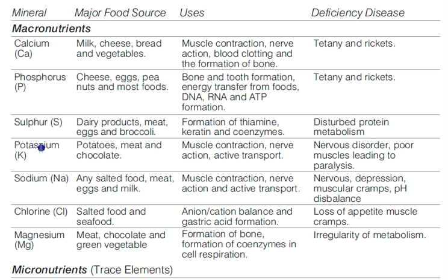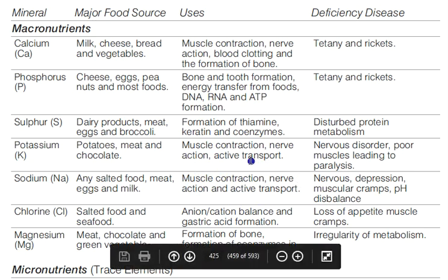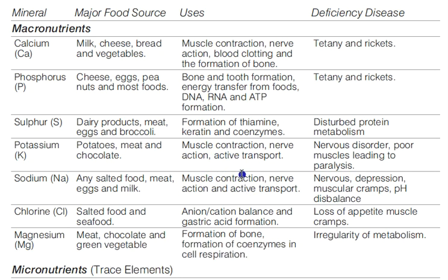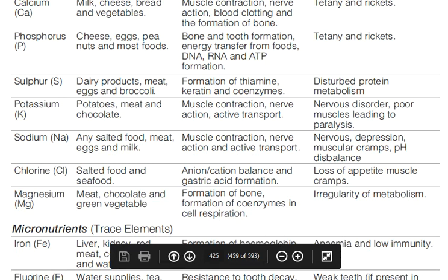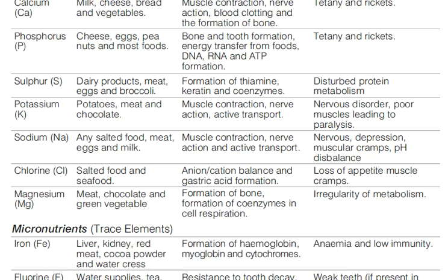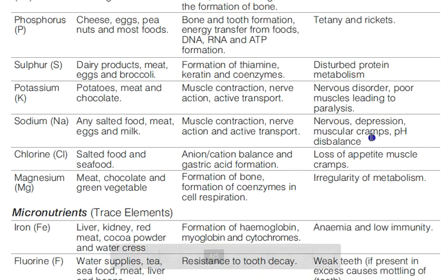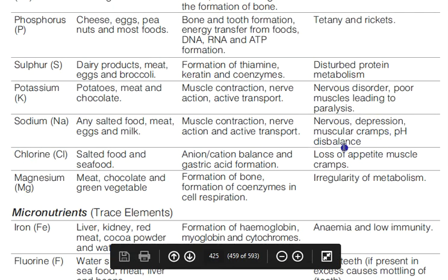Potassium is very important for heart health and is found in potatoes, meat, and chocolates. It is essential for muscle contraction, nerve action, and active transport. Sodium, found in salted foods, meat, eggs, and milk, is important for maintaining pH balance. Deficiency causes pH imbalance.